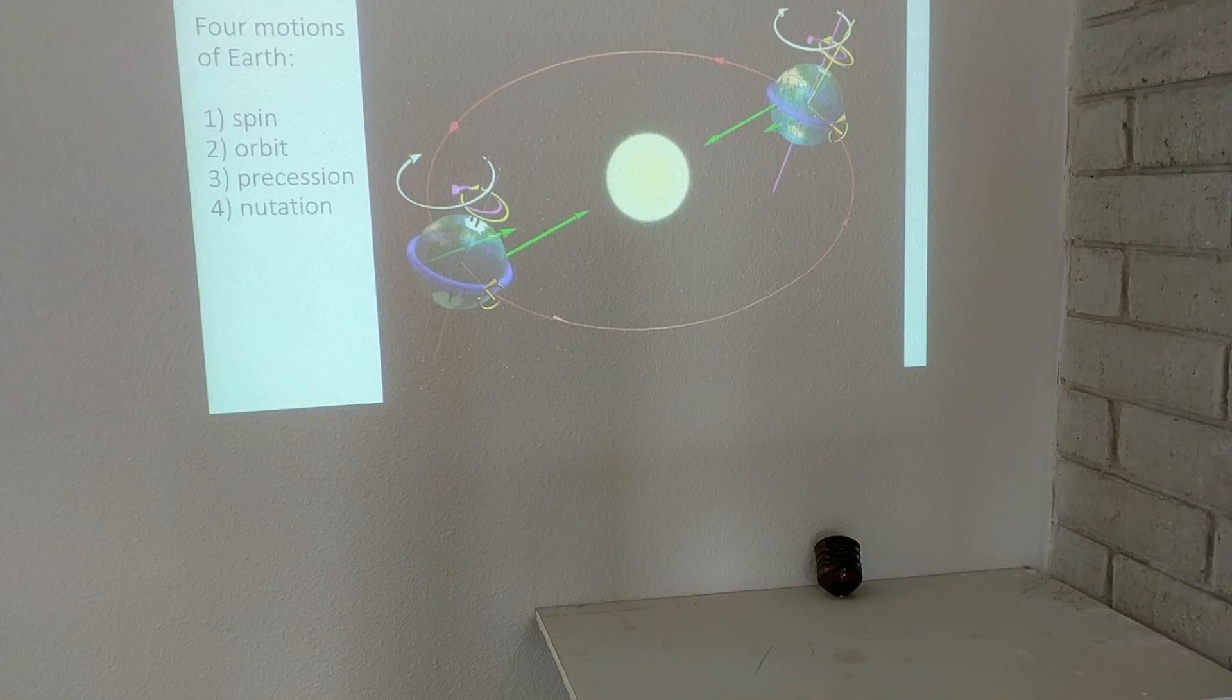So if we look at the four motions of the Earth, we have the spin which takes 23 hours and 56 minutes, and the orbit around the sun which takes 365 and approximately a quarter days.